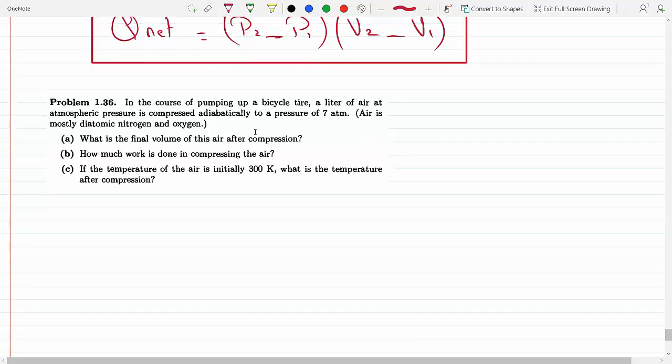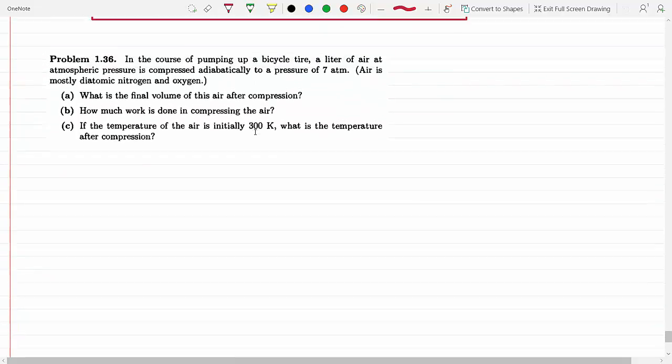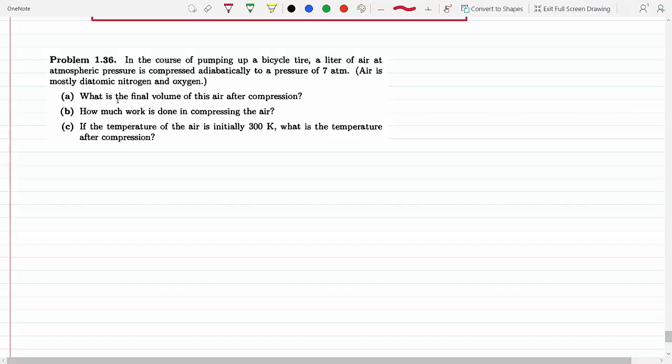In the course of pumping a bicycle tire, a liter of air at atmospheric pressure is compressed adiabatically to a pressure of 7 atm. Air is mostly diatomic nitrogen gas. Part A: What's the final volume of this air after compression?